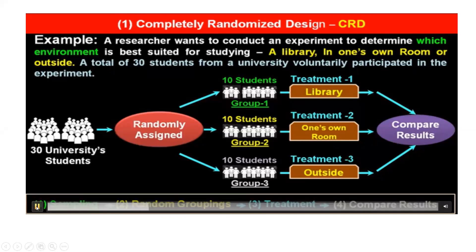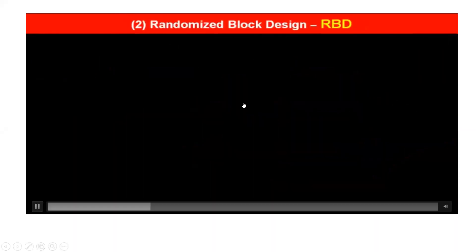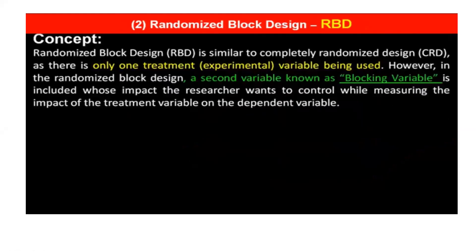When I compare results, there are four basic steps. Next is completely randomized block design. This is the second method of formal experimental design. Randomized block design is similar to completely randomized design as there is only one treatment experimental variable being used.